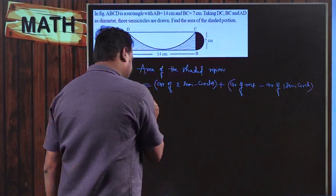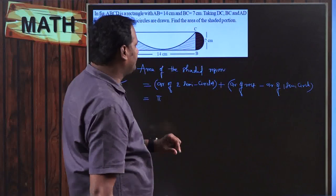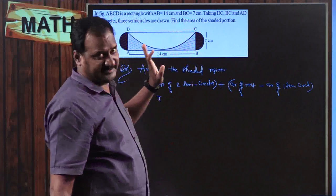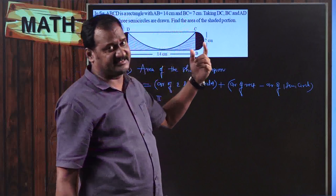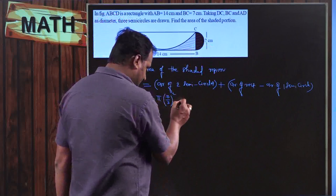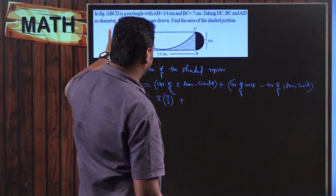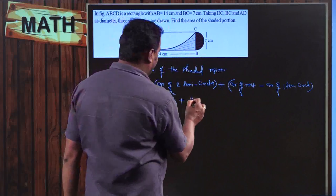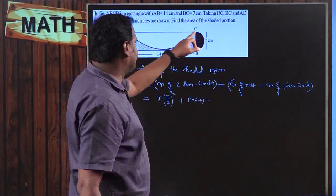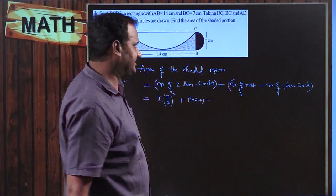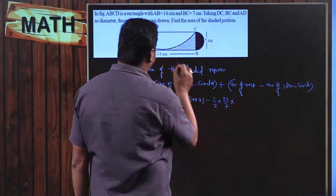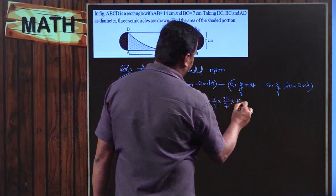Area of two semicircles equals the area of a full circle: π r². The radius here is BC/2 = 7/2 since BC and AD are both diameters. So: π × (7/2)². Area of rectangle = length × breadth = 14 × 7 = 98. Minus area of one semicircle: (1/2) × π × r², where this semicircle has diameter 14, so radius = 7. That gives (1/2) × (22/7) × 7 × 7.